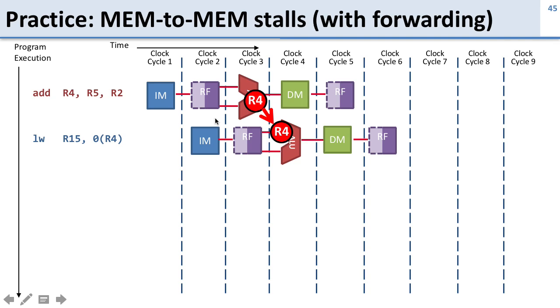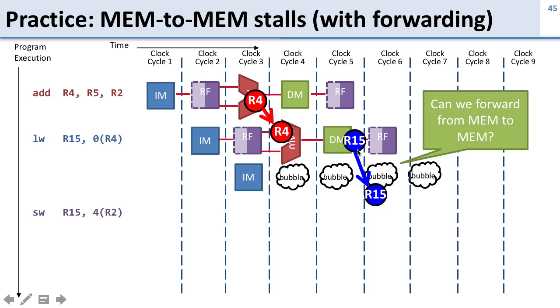So this gets rid of the delay between those two instructions. However, we only get the R15 from the memory back at the end of the memory cycle here, and we need to have that used at the ALU in the early part of the cycle. So now we've got a problem - we have to delay this still with a bubble.